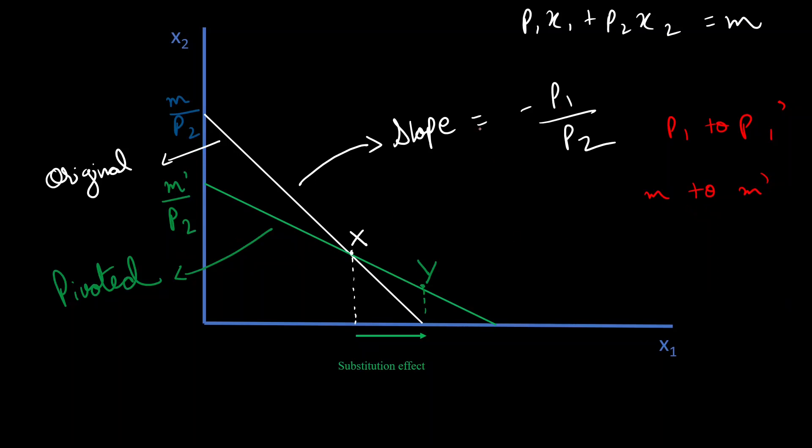Why is it pivoting? Because, well, the slope of the budget line is given by P1 by P2, right? And now, since our P1 is changing, so that means our slope is decreasing, right? And since our slope is decreasing, it's getting flatter. So, now the demand changes from X to Y.